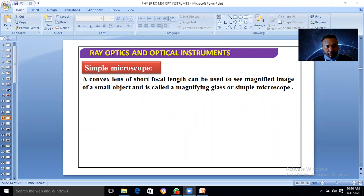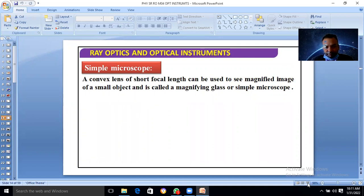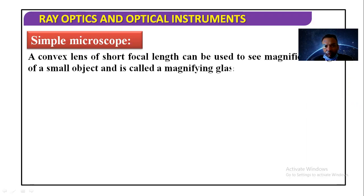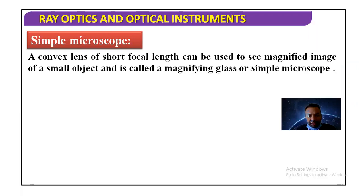Hello students, today we will start our new topic which is called simple microscope. Basically, a microscope is used to see small objects very clearly. It uses a convex lens of short focal length, and with the help of that we can get a magnified image. This magnifying glass is called a simple microscope.